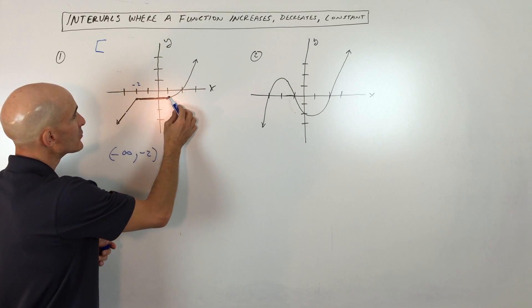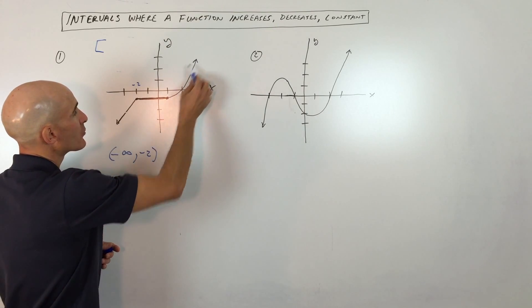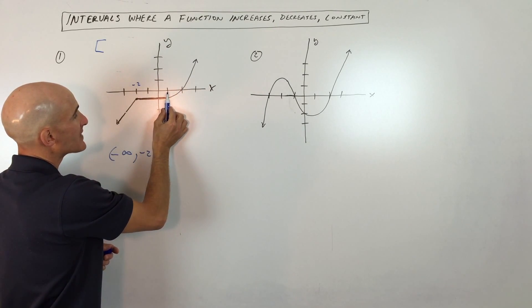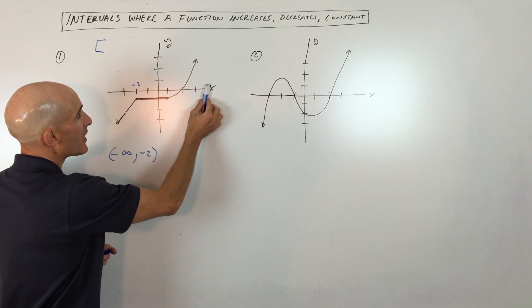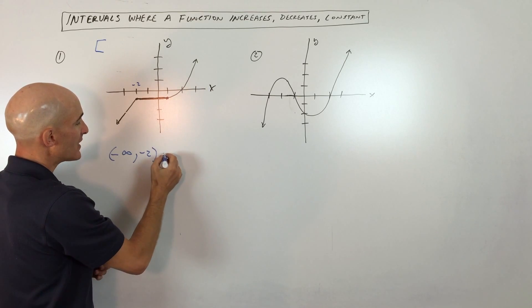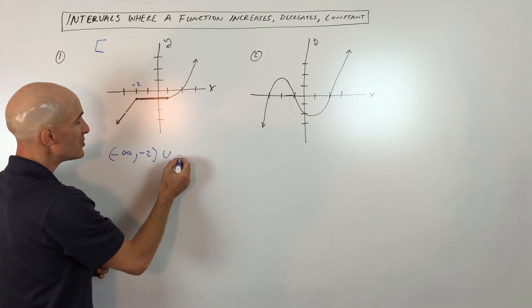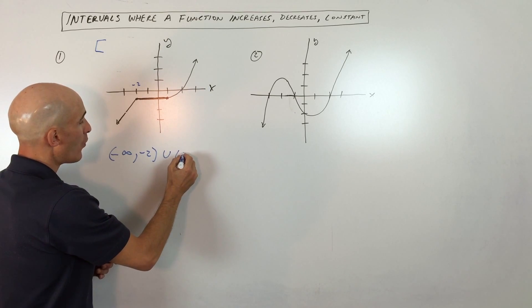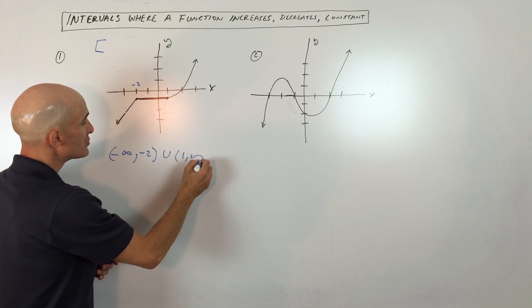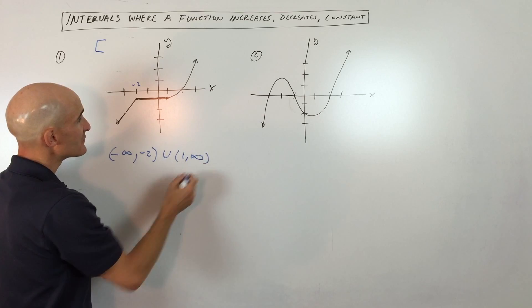We can also see that the graph is going up to the right when x is greater than one. So we're going to put union one to positive infinity.